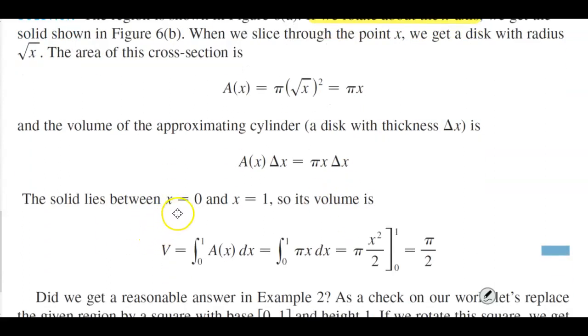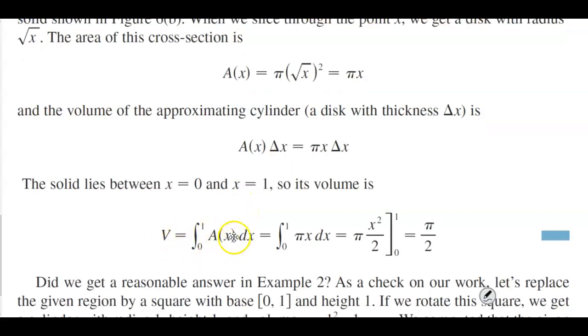The solid lies between x equals 0 and x equals 1. So here's our definition of volume: the integral from 0 to 1 of the area of the cross section dx, which equals the integral from 0 to 1 of πx dx. Taking the antiderivative of x, we have π times x²/2 from 0 to 1, and we get a solution of π/2 for the volume.